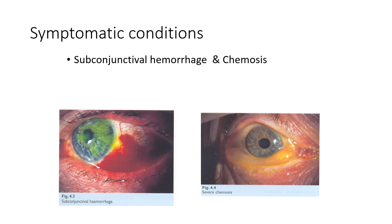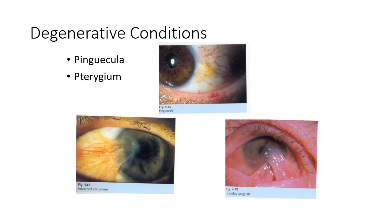Symptomatic conditions of the conjunctiva include subconjunctival hemorrhage and chemosis, which we will see in the next part. Degenerative conditions include pinguecula — a yellow-shaped lesion — and pterygium, a growth of conjunctiva over the cornea. These are important topics asked in viva examinations.